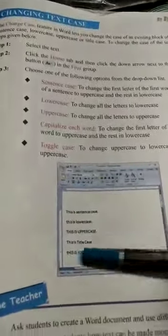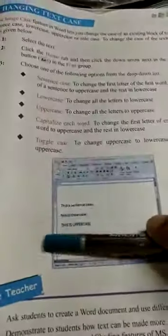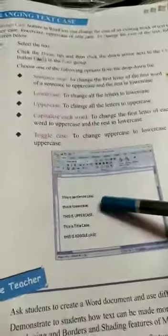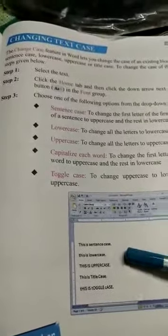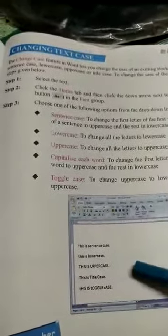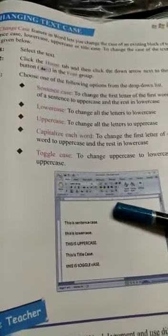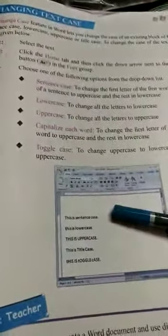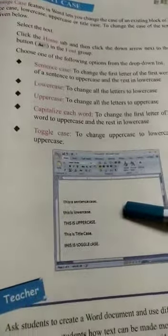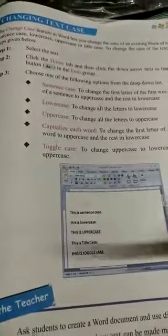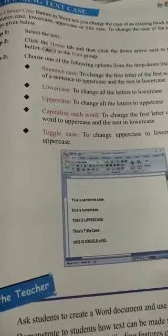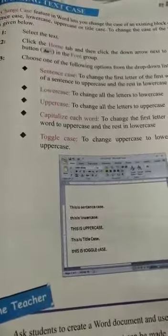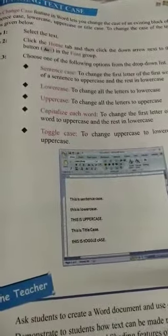I think all of you understand how our five types of Change Case work. If you mistakenly type any word in capitals, no need to retype it — just select it and apply the appropriate case. The shortcut key for changing the case is: select the text and press Shift + F3 from the keyboard. I will show you this by doing practical in the next video. Please make practice at home for writing in your book, exercise, and question answers. Thank you.